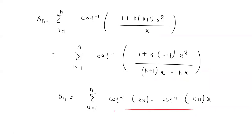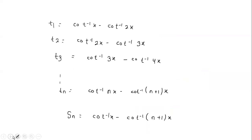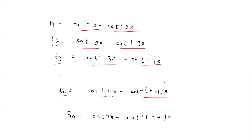Now we have the summation in the form of a telescoping difference. For k=1: cot⁻¹(x) − cot⁻¹(2x); for k=2: cot⁻¹(2x) − cot⁻¹(3x); for k=3: cot⁻¹(3x) − cot⁻¹(4x); and the last term is cot⁻¹(nx) − cot⁻¹((n+1)x). Adding all terms, intermediate terms cancel, leaving only cot⁻¹(x) − cot⁻¹((n+1)x).